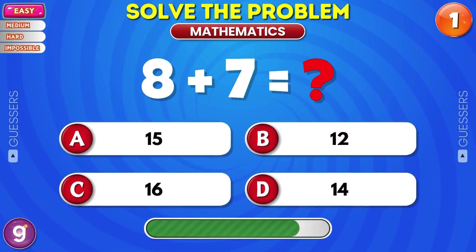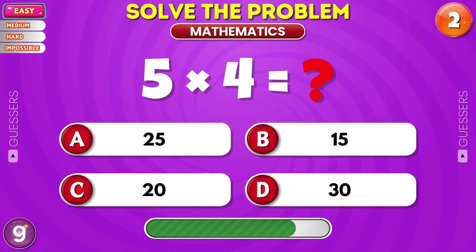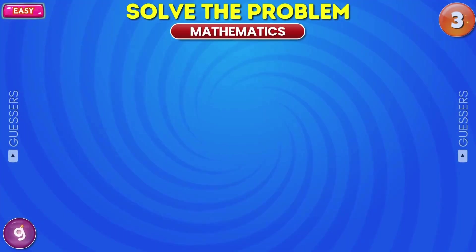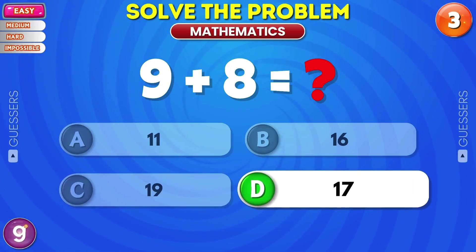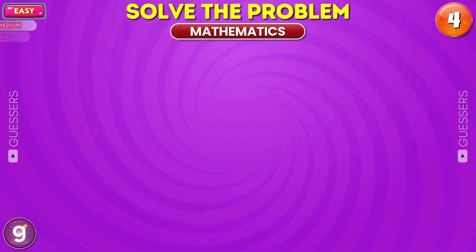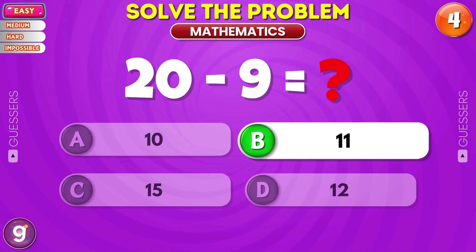How much is 8 plus 7? 15. What's 5 into 4? 20. What's the result of 9 plus 8? 17. What's 20 minus 9? The answer is 11.